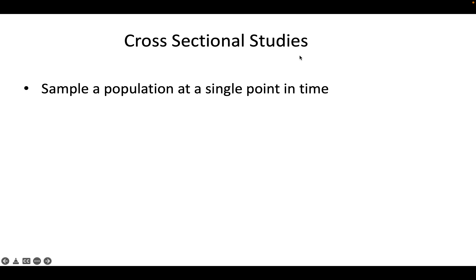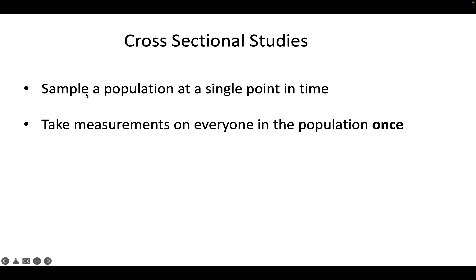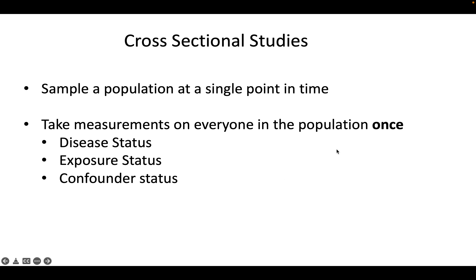The basics of how a cross-sectional study is carried out: a sample of a population is taken at a single time. So if it's a city with a population of 100,000, you might sample 1,000 randomly. Let's say we take a simple random sample of 1,000 people from the town, and then on that one day, for every person we measure their disease status, their exposure status, and their confounder status — and we don't measure it again.